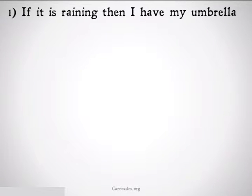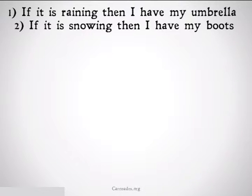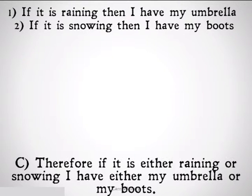If we take the final problem from our last video on the rules of replacement and put it into actual words instead of symbols, we would end up with: if it is raining, then I have my umbrella; if it is snowing, then I have my boots. And we'd want to conclude: therefore, if it is either raining or snowing, I have either my boots or my umbrella.